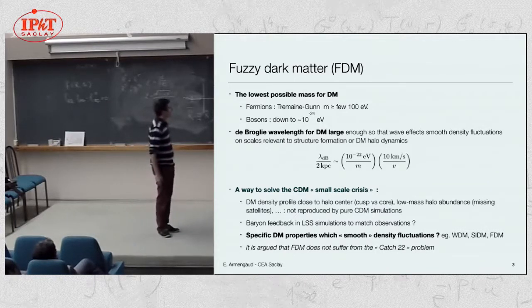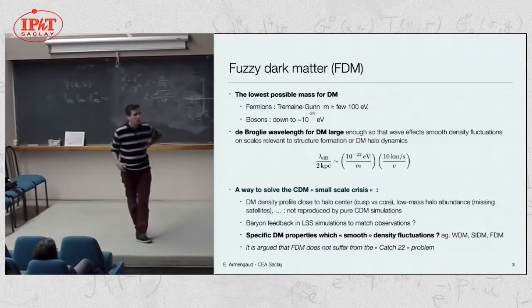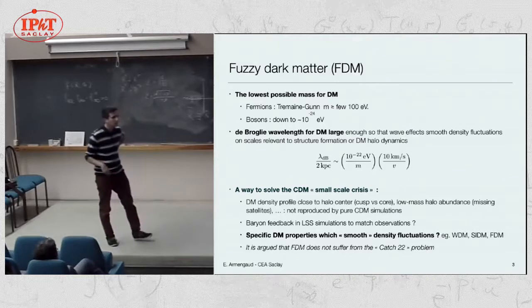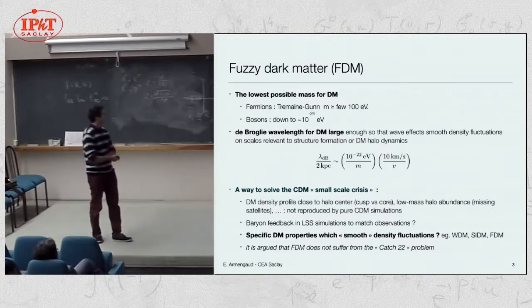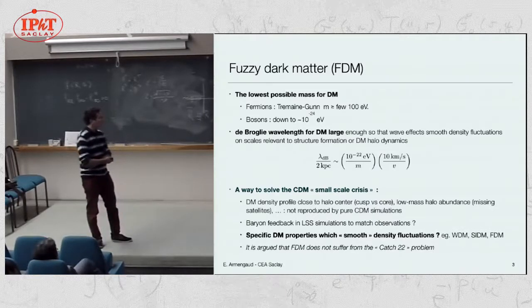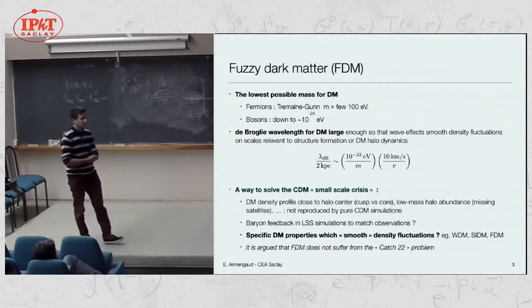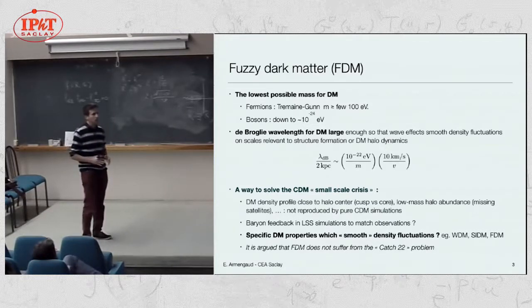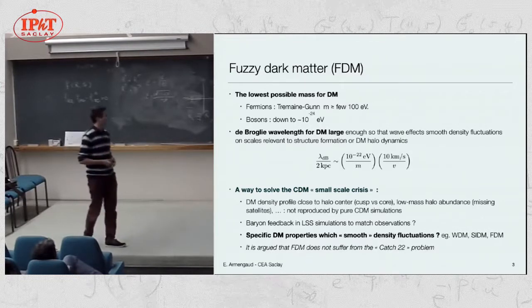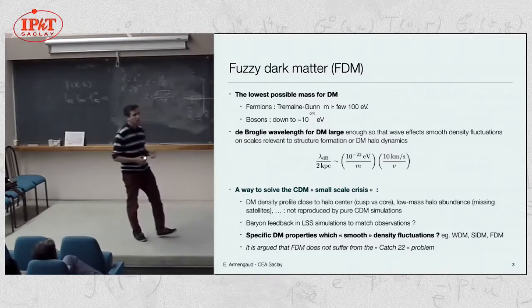Fuzzy dark matter is also a good candidate to solve the so-called small scale crisis of cold dark matter. The dark matter density profiles or halo abundances are not well reproduced by pure CDM simulations. It's a small scale problem. Feedback, the effect of baryon physics, can solve the issue. But it's also possible that it opens the door to specific dark matter properties which would smooth density fluctuations, the power spectrum, at very small scales. Warm dark matter, self-interacting dark matter, and fuzzy dark matter are examples.